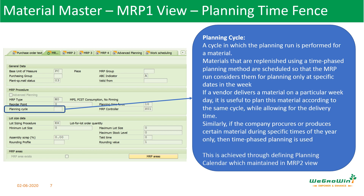For example, if a vendor is delivering material every Wednesday, you should align your proposals so that the delivery date is on Wednesday. Some suppliers are big enough that they will supply only on a specific date regardless of what date you request. Rather than getting confused, we can adjust our system to align with them to ensure our supply. We can define the planning cycle and attach it to the material so that the system proposes requirements aligned with the supplier's delivery date.